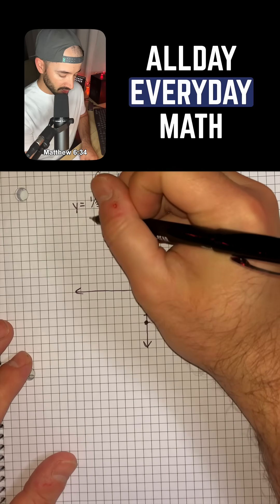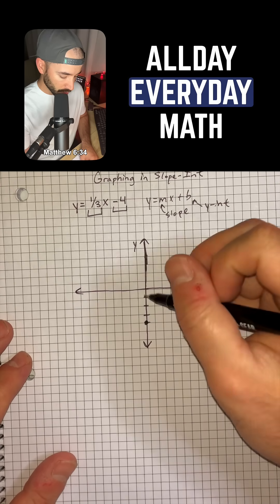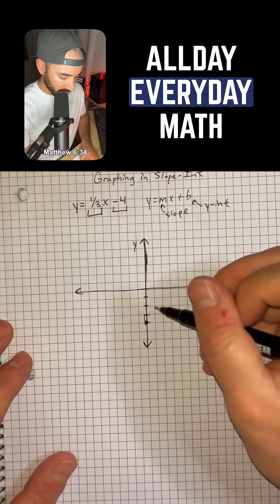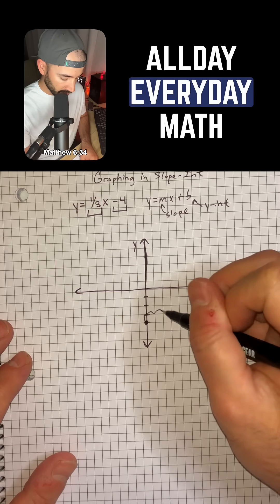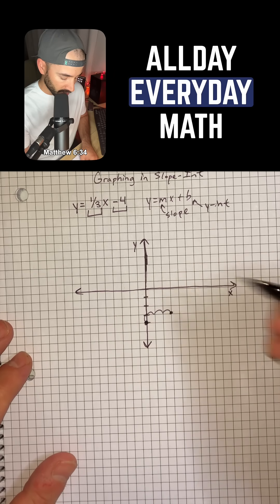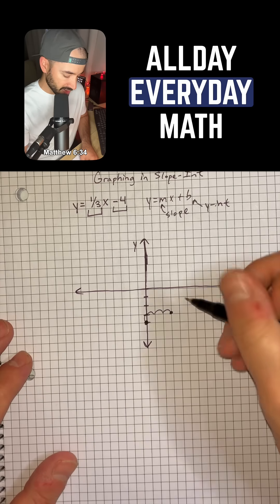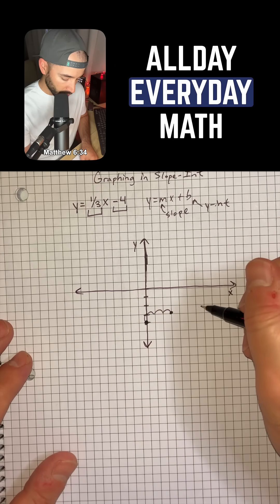And then our slope is going to be 1/3, which means we're going to rise 1 and run to the right 1, 2, 3, and that'll be our next point. And so now we can just continue that pattern up 1 over 3.